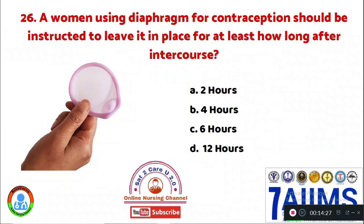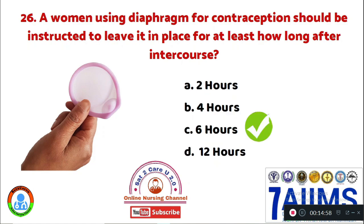Question 26: A woman using a diaphragm for contraception should be instructed to leave it in place for at least how long after intercourse? Option A: 2 hours. Option B: 4 hours. Option C: 6 hours. Option D: 12 hours. The diaphragm should be left in place after intercourse for a minimum of 6 hours. Option C, 6 hours, is correct.